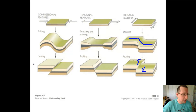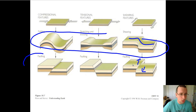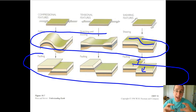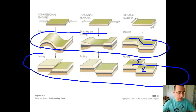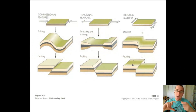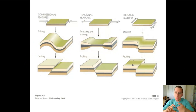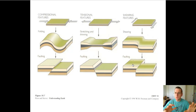These structures we call folds, and these we call faults — which means the rocks can either bend and change shape, or they can actually break. How they break and how they actually bend depends on the kinds of stress applied. We're going to review this as we finish talking about stress and strain.